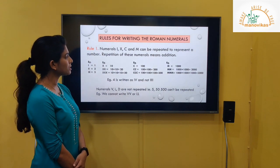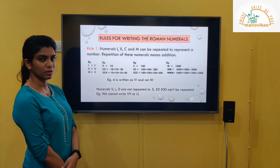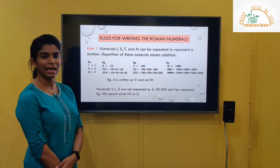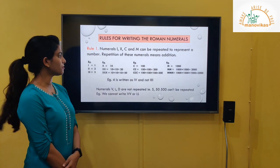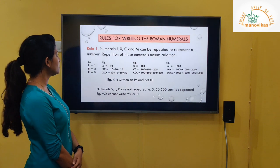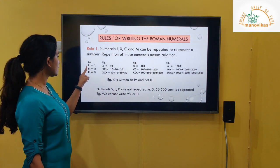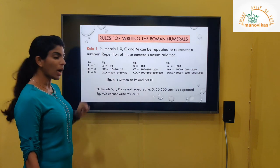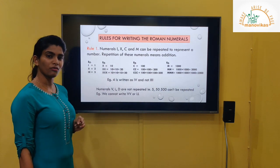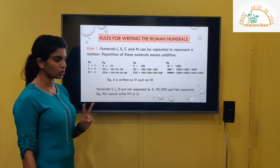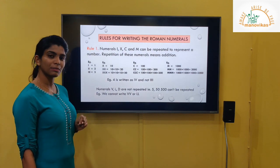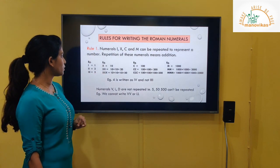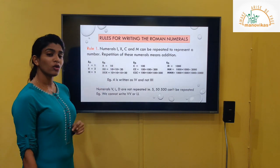Rule 1: Numerals I, X, C and M can be repeated to represent a number. Repetition of these numerals means addition. For example, the value of I is 1, so if there are two I's the value will be 2. The value of three I's will be 3.